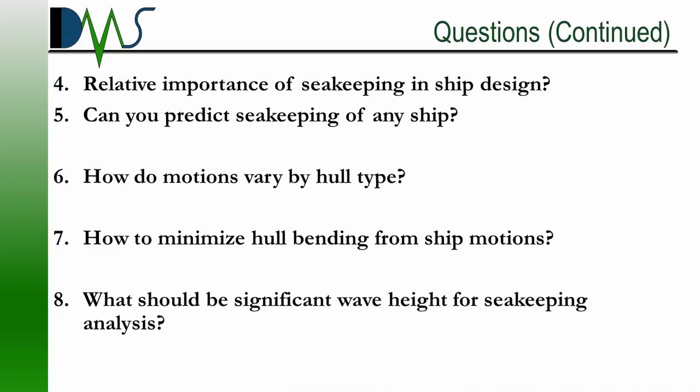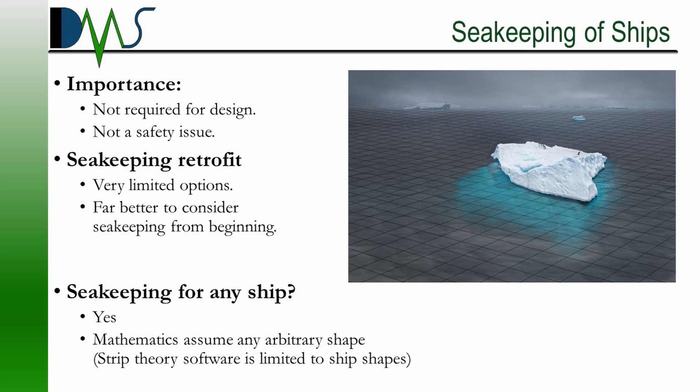Can we predict the seakeeping of any ship by looking at its form and parameters? Generally, the answer is yes. The catch is that the information required for predicting seakeeping is a lot more extensive than you normally find in an average ship design. We often have to make a lot of estimates and guesses in seakeeping analysis, and that's where a lot of the inaccuracies start to come in.